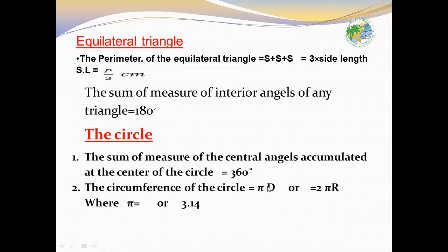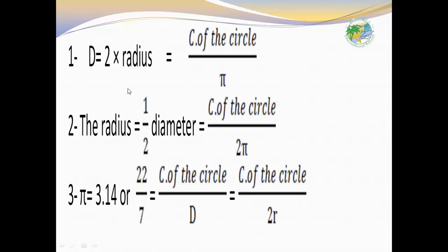The circumference of the circle equals pi times diameter, or 2 times pi times r, where pi equals 3.14. The diameter equals 2 times radius. If we have the circumference and want to find the diameter, we divide the circumference by pi. The radius equals half the diameter. If we have the circumference and want to find the radius, the radius equals circumference over 2 times pi.